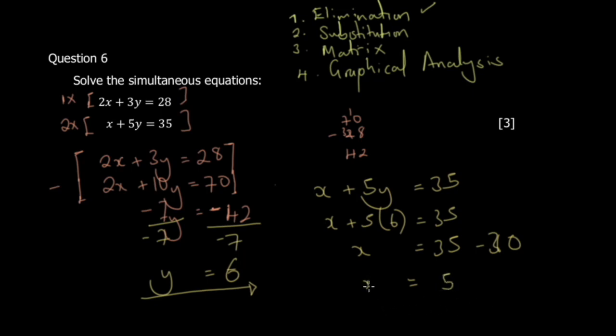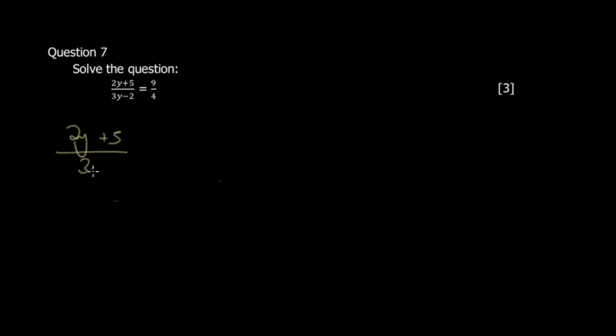Therefore x = 5 and y = 6 — that's question six done. Let's move to question seven, which says: (2y + 5) / (3y − 2) = 9/4.